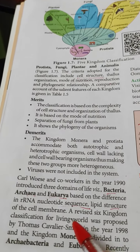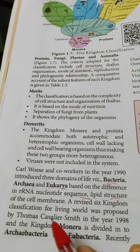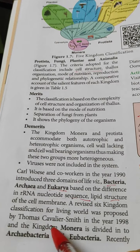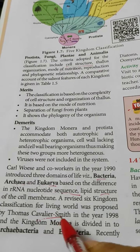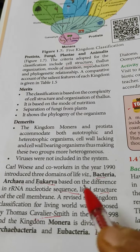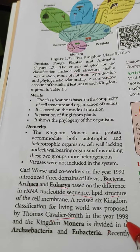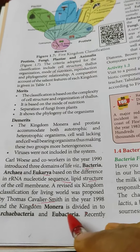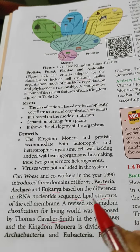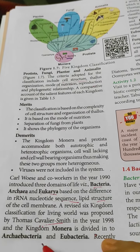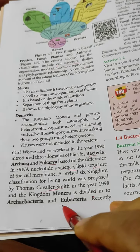A revised six kingdom system of classification for the living world was proposed by Thomas Cavalier-Smith in 1998, in which the kingdom Monera is divided into two: Archaebacteria and Eubacteria.